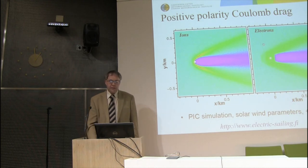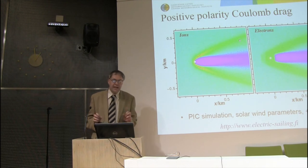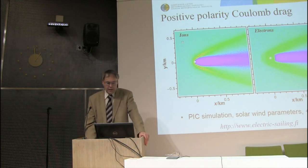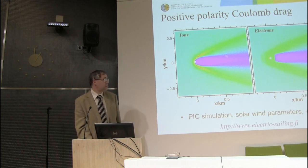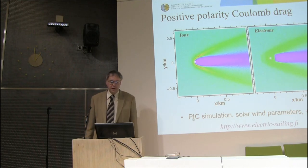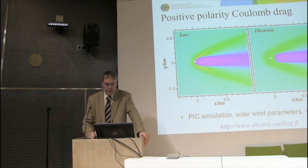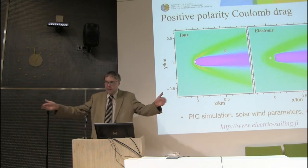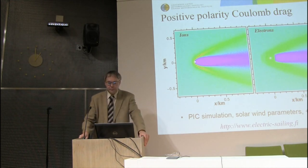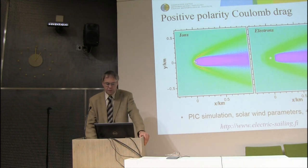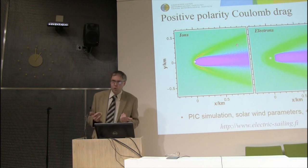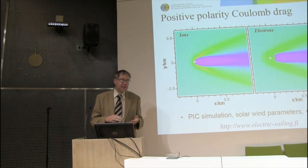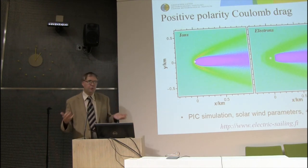Here is a particle-in-cell simulation result showing the density of ions and electrons. Ions are mostly protons in solar wind. The coordinates are in kilometers, so the scale size of the structure forming around the tether is a couple of hundred meters. When the solar wind comes from the left, ions get pushed aside by the repulsion of the electric field of the tether at the center — the white dot. The result looks qualitatively similar to Earth's magnetosphere — more like an 'electrosphere.'